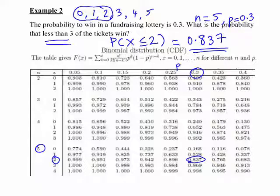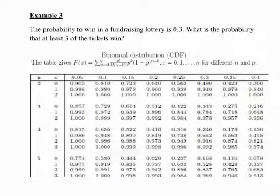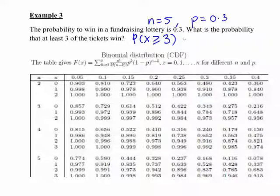But sometimes you might need to extend it. In particular, suppose in the same scenario we've got 5 tickets, so n equals 5, probability of success is 0.3, but suppose we'd said what is the probability that at least 3 tickets win? So that would be the probability of X greater than or equal to 3. Well, if you look at the scenario and all the possibilities, at least 3 is the complement or opposite of less than or equal to 2 in this case.